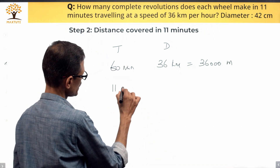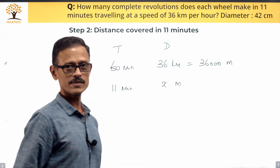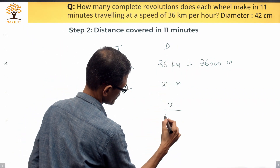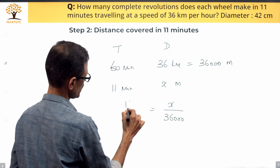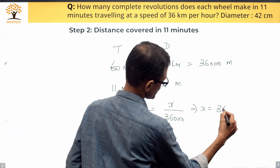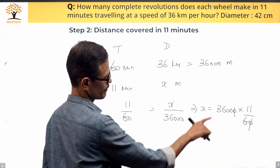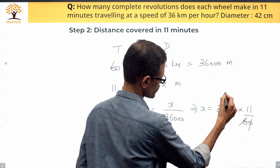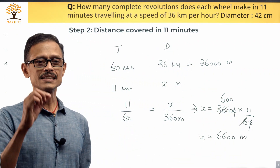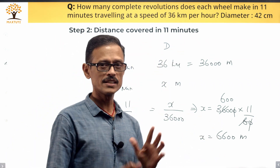In 11 minutes, let's say the truck covers x meters. More time means more distance, so it's directly proportional: x divided by 36,000 equals 11 divided by 60. Cross-multiplying gives x equals 36,000 times 11 divided by 60, which simplifies to 6,600. So the total distance covered in 11 minutes is 6,600 meters.